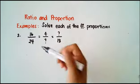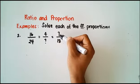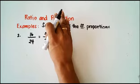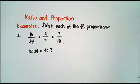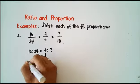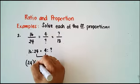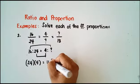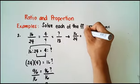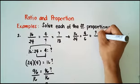For number two, 16 over 24 equals 4 over question mark equals question mark over 18. Let's take the first two ratios: 16 is to 24 is equal to 4 is to question mark. We get the product of the means: 24 times 4 equals the product of the extremes, 16 times question mark. So 96 equals 16 times question mark. Divide both sides by 16 — question mark equals 6.